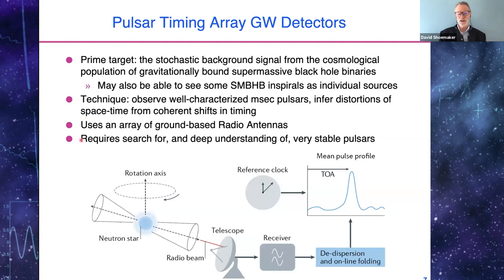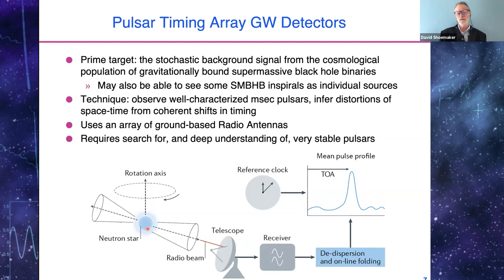The technique is to observe well-characterized millisecond pulsars. A millisecond pulsar radiates radio waves due to its magnetic field, spun up due to the accretion that formed the neutron star — seen as a highly periodic signal by a radio telescope. Using techniques to add signals together and remove dispersion, you can get an extremely accurate measurement of the time of arrival of the clock ticks. As a gravitational wave passes, the apparent distance between us and that clock changes, leading to a shift in arrival time. This requires finding and deeply understanding very stable pulsars.